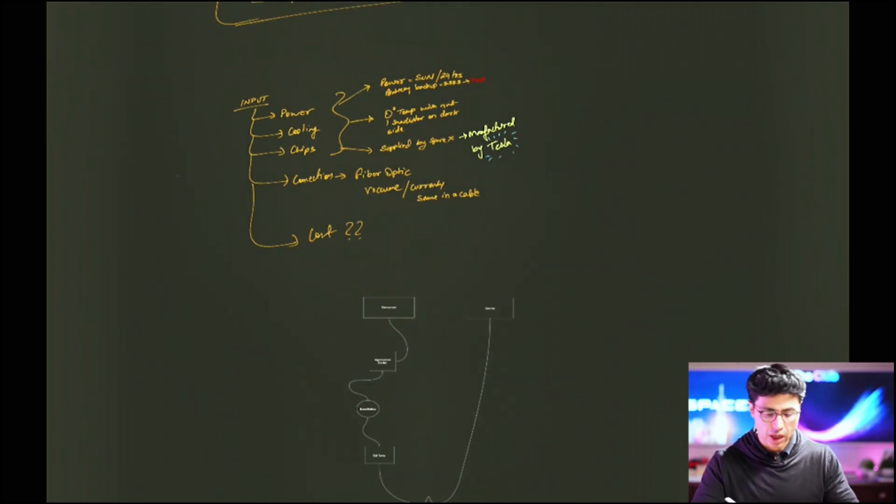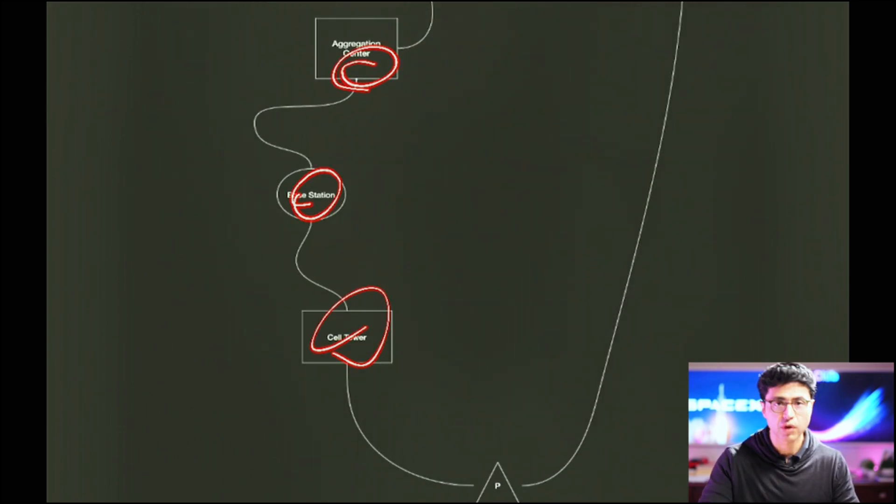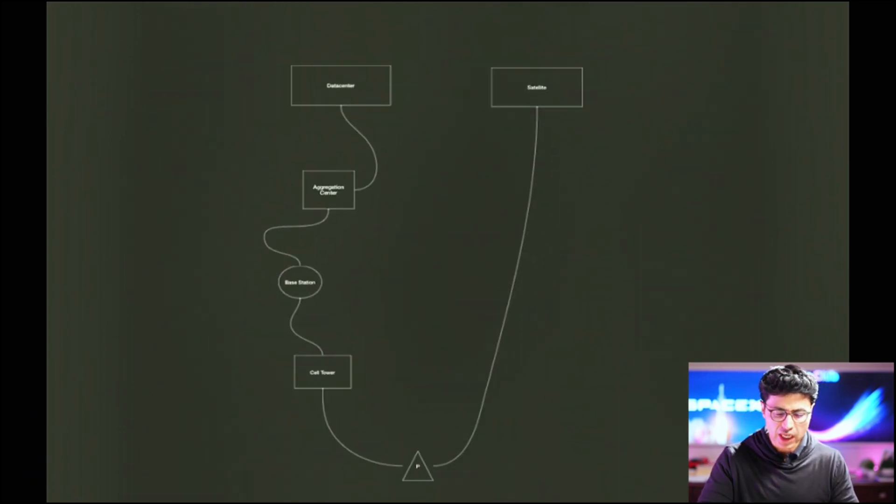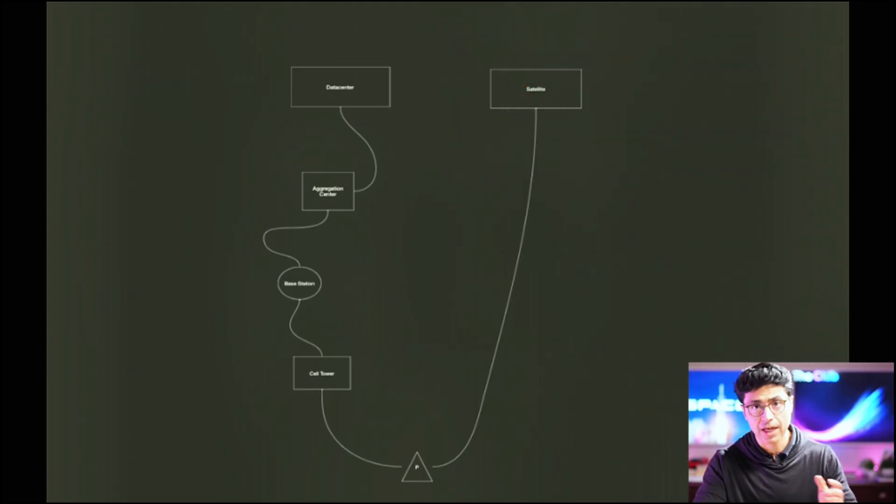So imagine this, the cost saving of all this along with the cost saving of the data center. So we have two cost savings here. We don't need any of the cell towers. We don't need base station. We don't need aggregation center. All we need is basically a phone and a satellite. And now this satellite is connected to another satellite. That satellite is connected to another satellite. That satellite is connected to other. And now we have the space data center that's basically performing all the compute and then basically are sending you the information that you need.